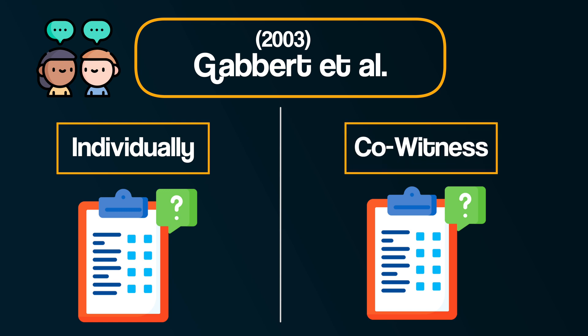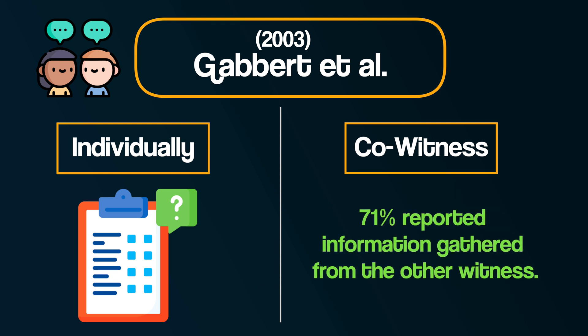This was the co-witness condition. They found that 71% of witnesses in the co-witness condition reported information they had gathered from the other witness. And shockingly, 60% of participants in the co-witness group reported that the girl was guilty of a crime, even though they had not actually witnessed it taking place. In conclusion, this study shows that post-event discussion can influence recall of a crime and demonstrates another way that misinformation can influence the accuracy of eyewitness testimony.